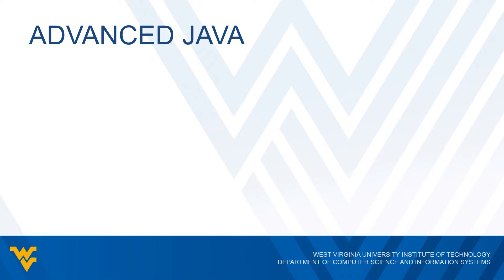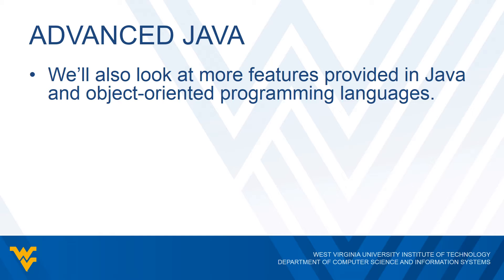Just like in CS 121, Java is going to be the programming language we use in all the lab assignments, programming assignments, and examples in this course. But we're not done with everything Java has to offer — we've only hit the tip of the iceberg. In this class we're going to be looking at more advanced features in Java, particularly on the object-oriented programming side. We've looked at classes and objects, but now we're going to take those a step further — and these features are also available in other languages such as C++.